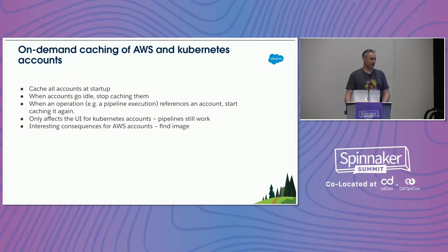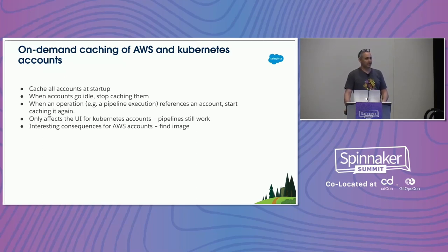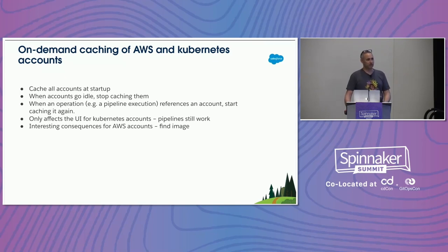AWS accounts were more complicated. The Find Image From Tags stage basically only interacts with the cache, so if the cache is empty you're going to say 'find me an image' and you're not going to get an image if you haven't been caching images for that account — you're toast. So we had to do something to fix that. There's already this notion of forced cache refresh, another gnarly detail of how AWS pipeline stages work.